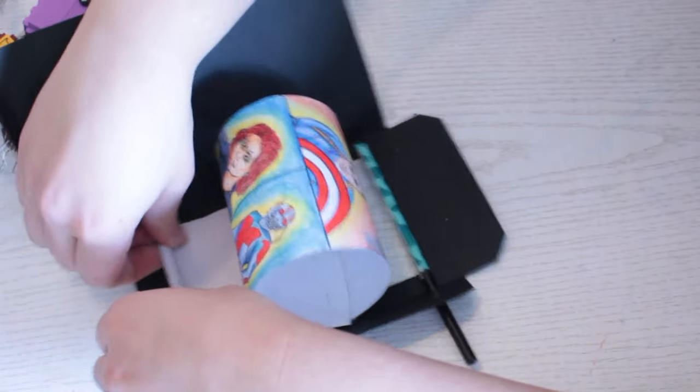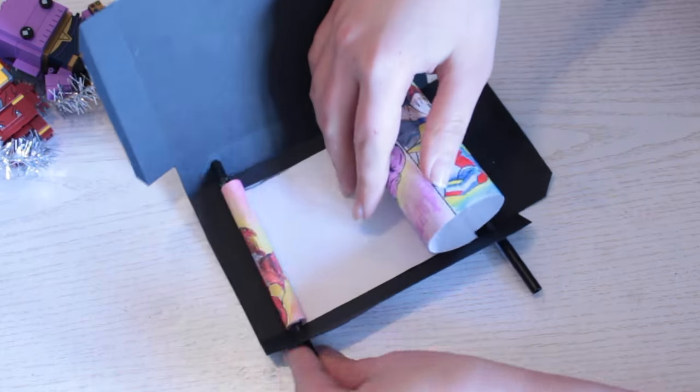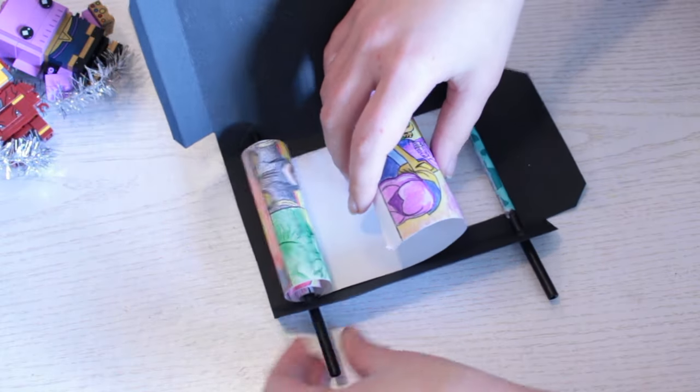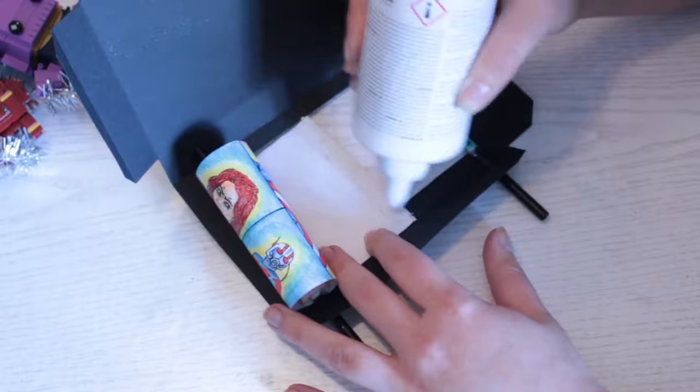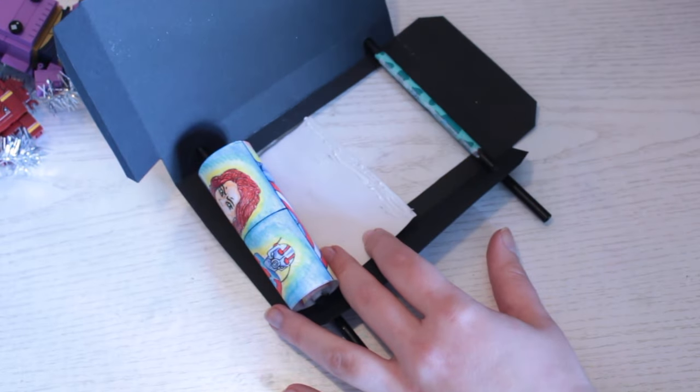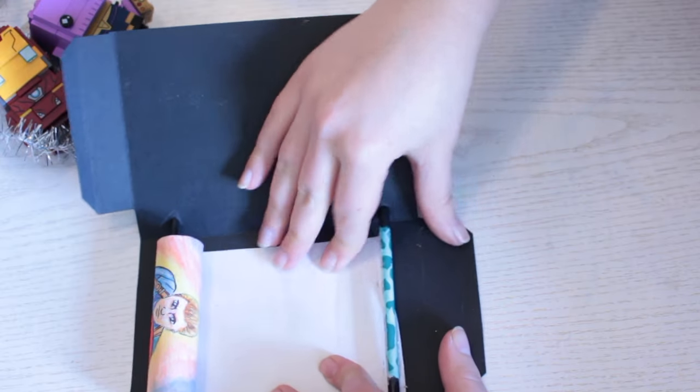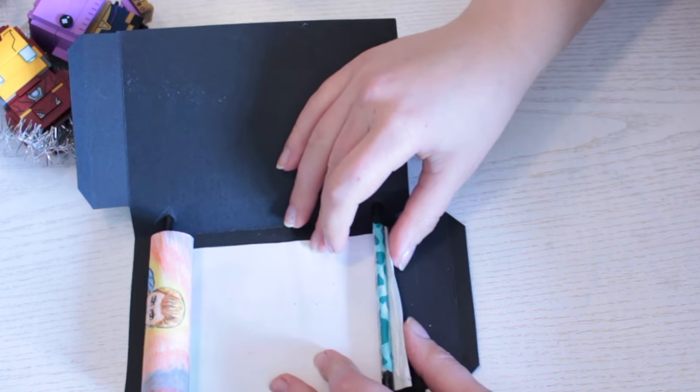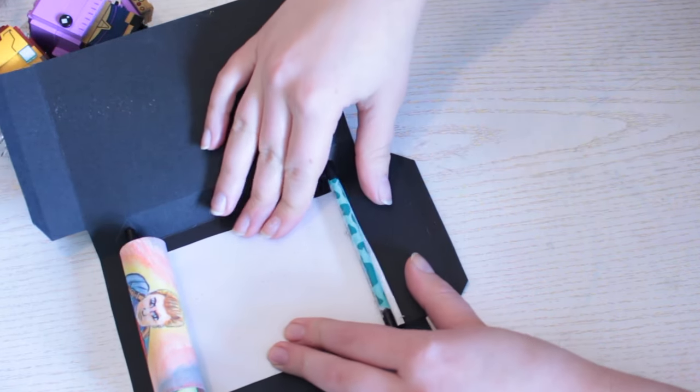Leave this end to dry before rolling the paper onto the straw. Put some glue on the other end and attach it to the other straw. Again, make sure to press down firmly to make it stick. Then leave it to dry completely.